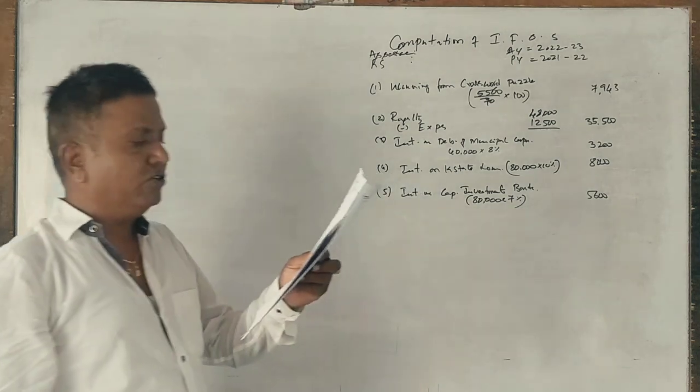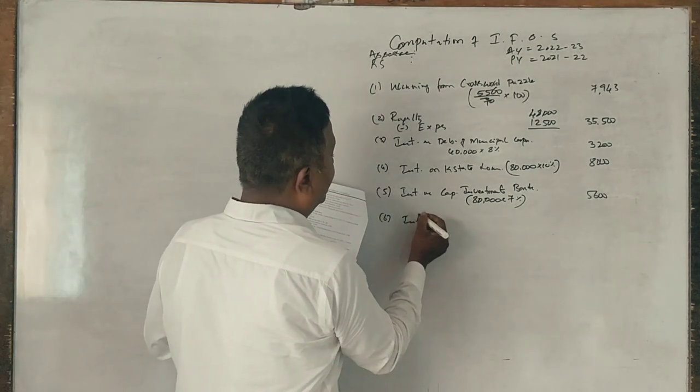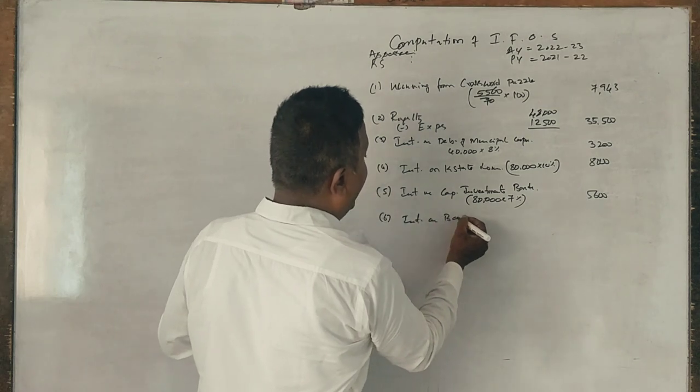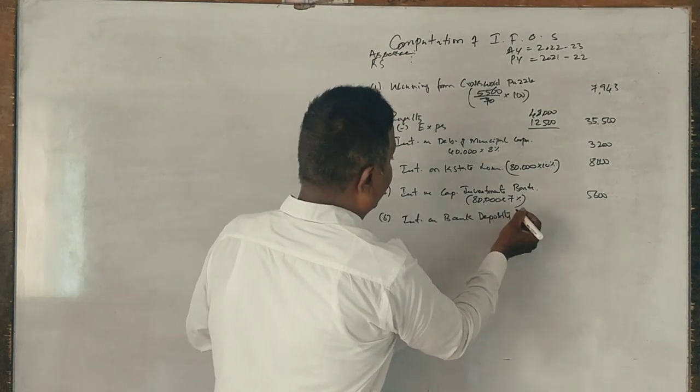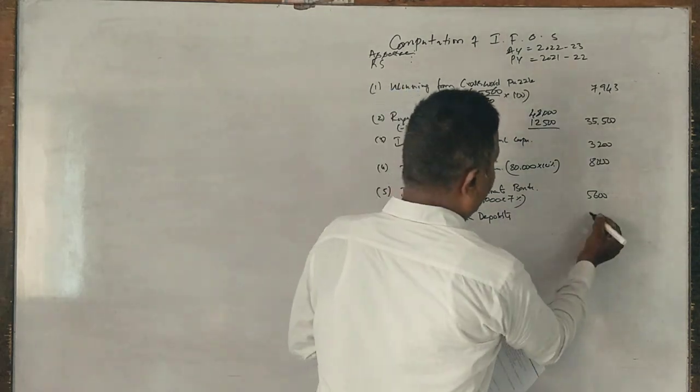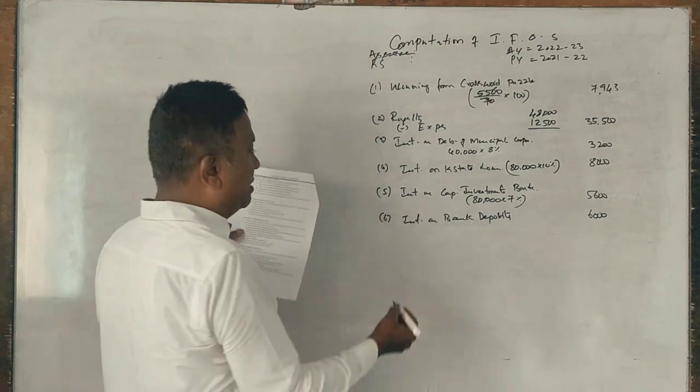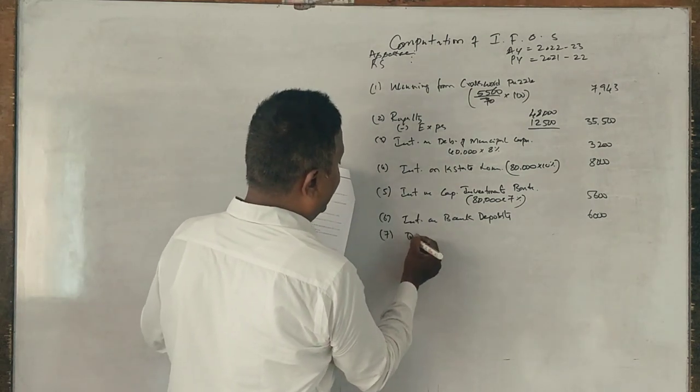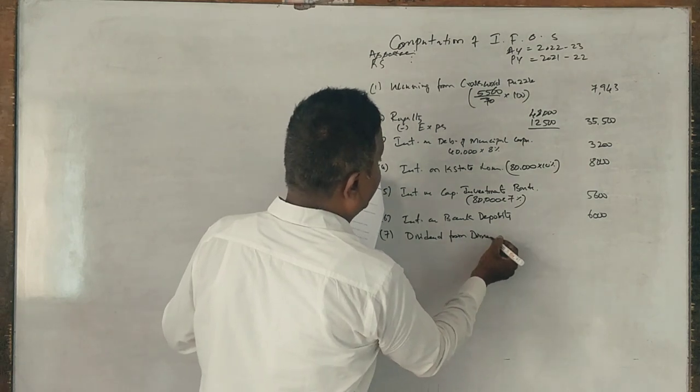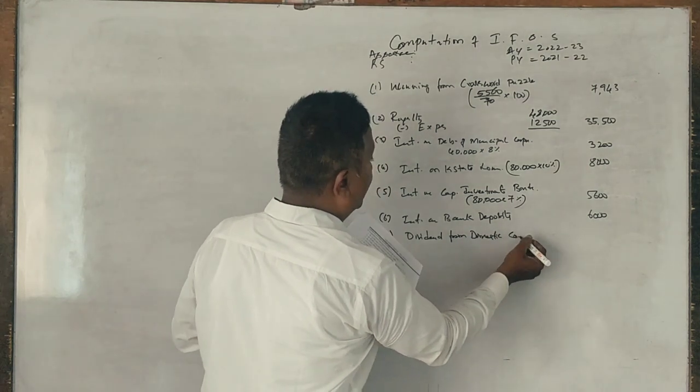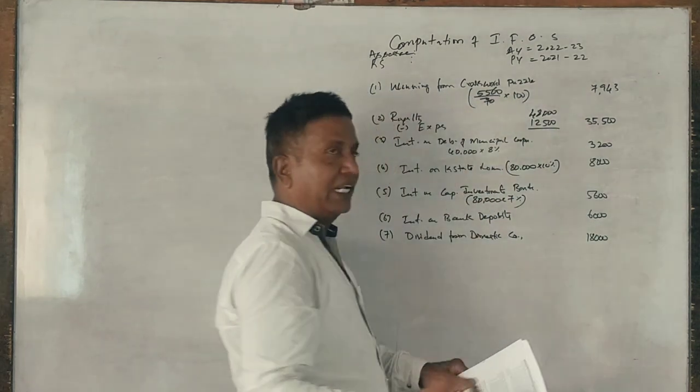Next, 6,000 interest on bank deposits. See, interest on bank deposits, next. Dividend from domestic company fully taxable, correct. Dividend from domestic company: 18,000.